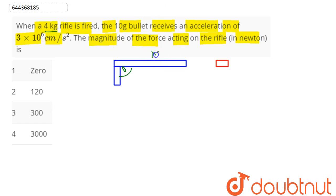This is our gun with mass given as 4 kg, denoted by capital M. The mass of the bullet is 10 grams. It receives an acceleration of 3 × 10^6 cm/s². This is the acceleration of the bullet.